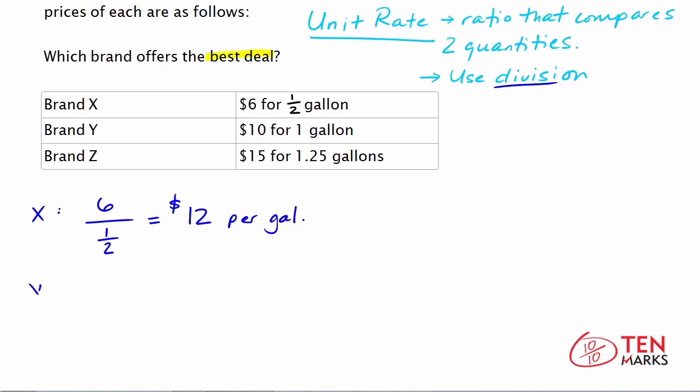Now, let's take a look at brand Y. Brand Y is $10 for one gallon. So you would use division again. 10 divided by 1, which is $10 per gallon.